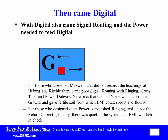Then came digital. With digital also came signal routing and the power needed to feed the digital. For those who knew not Maxwell and did not respect the teachings of Hubing and Ritchie, there came poor signal routing with ringing, crosstalk, and power delivery networks that created noise which corrupted ground, giving fertile soil from which EMI could sprout and flourish. For those who designed quiet power, vanquished ringing, and let not the return current go astray, there was quiet in the system and EMI was held in check.